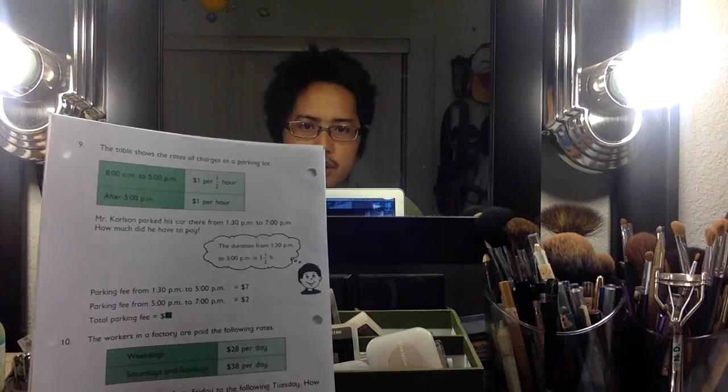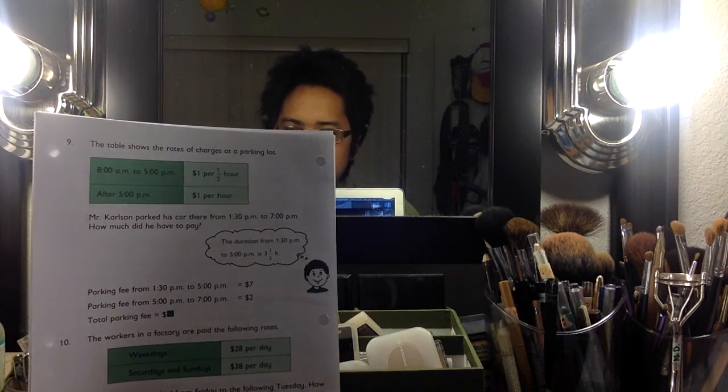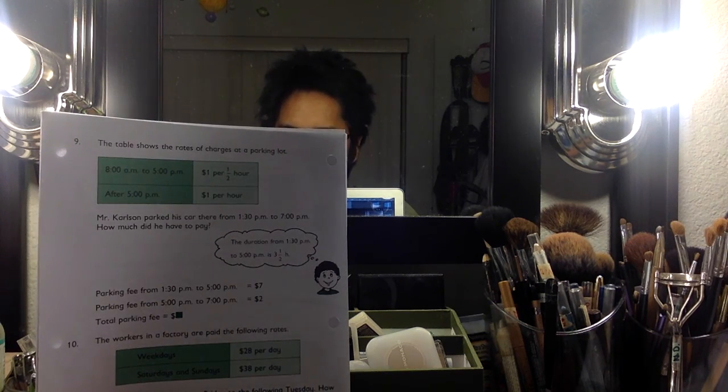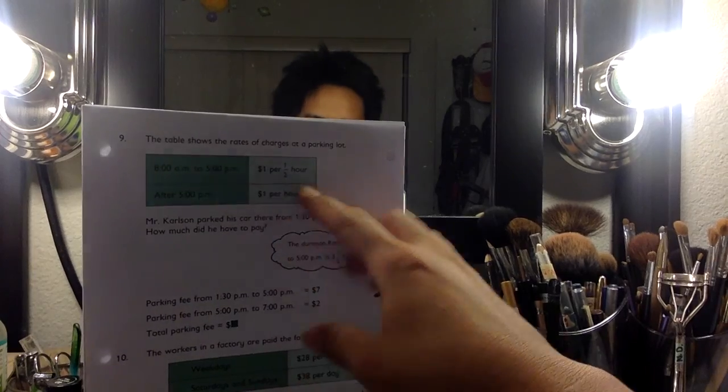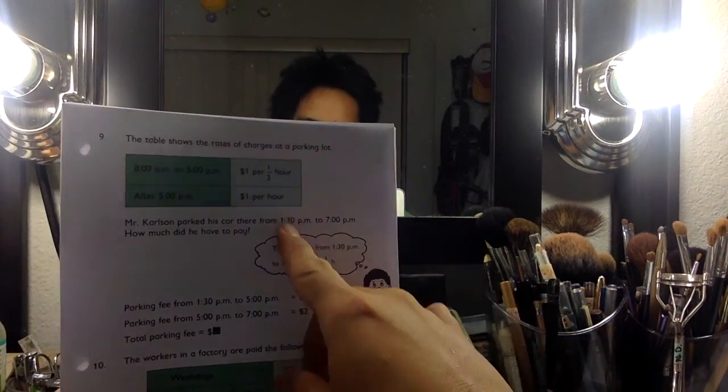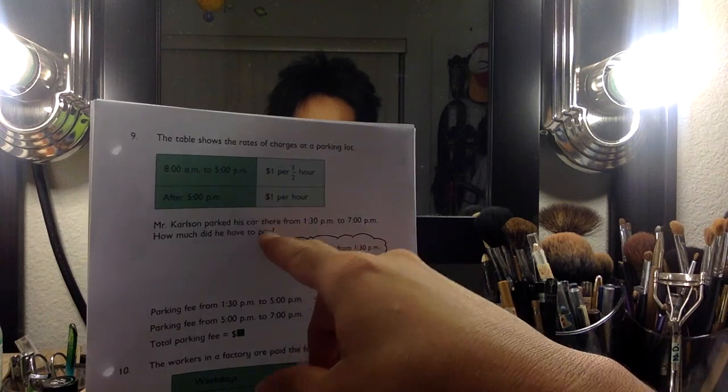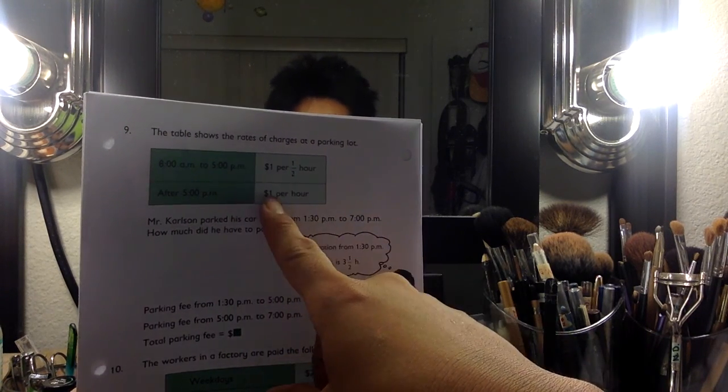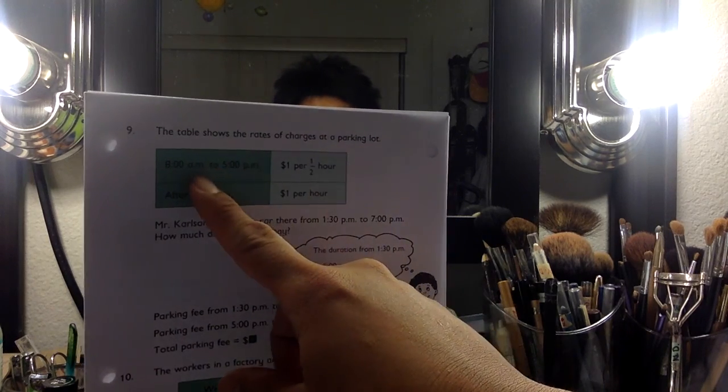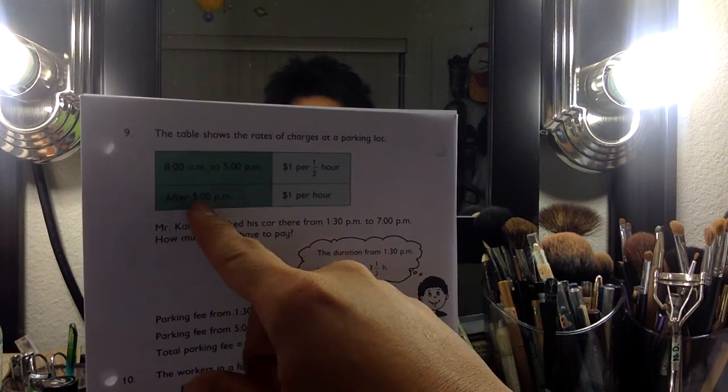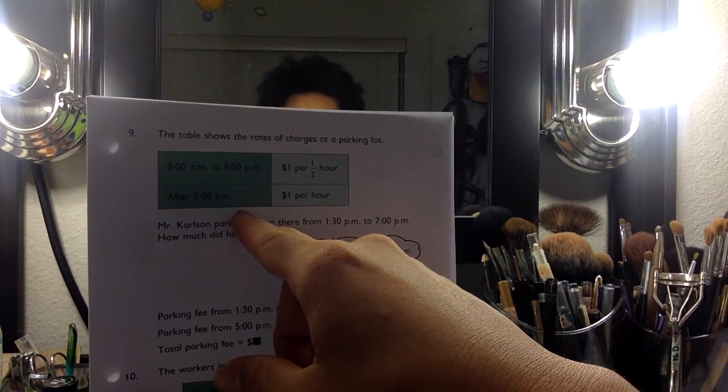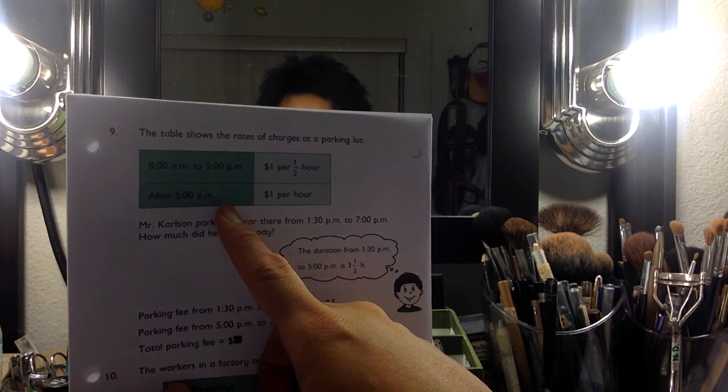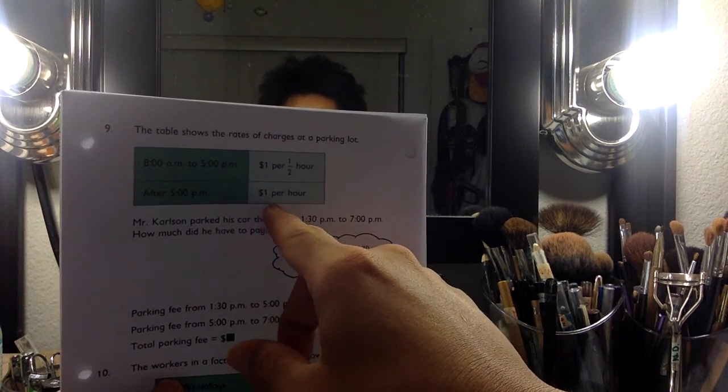The table shows the rates of charges at a parking lot. It charges $1 for every half hour, and after 5 p.m. it charges a different rate - $1 for every hour. So you can think of this as $2 for every one hour and $1 for every hour. Apparently it charges more during the middle of the day, and then at the end of the day, after everyone maybe has gone home from work, they'll charge $1 per hour.